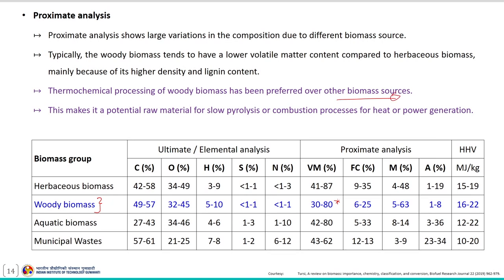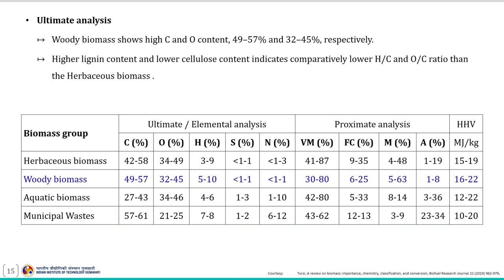Woody biomass also makes a potential raw material for slow pyrolysis or combustion processes for heat and power generation. The highest limit of volatile matter in woody biomass is 80 percent and the lower limit is 30 percent. Ash content in woody biomass is relatively low compared to herbaceous biomass. The ultimate analysis shows high carbon and oxygen content, and the higher lignin content with lower cellulose content indicates that woody biomass has a lower H/C and O/C ratio than herbaceous biomass.